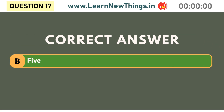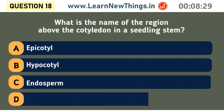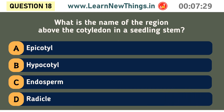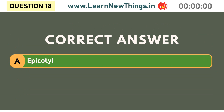What is the name of the region above the cotyledon in a seedling stem? Epicotyl.